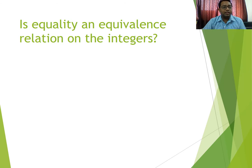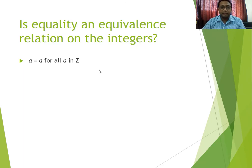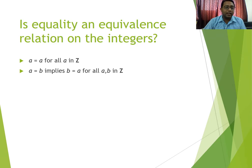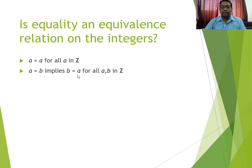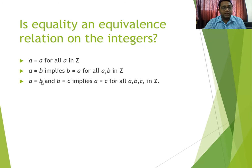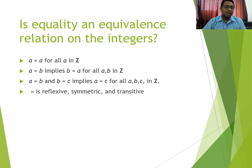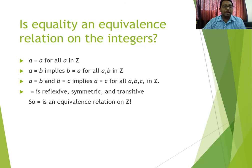Now, let us verify that equality is an equivalence relation on the set of integers. First, a = a for all a in S — obviously true, so it is reflexive. Second, if a = b then obviously b = a, so it is symmetric. Third, if a = b and b = c, then obviously a = c, so it is transitive also. Therefore the equals relation is reflexive, symmetric, and transitive — so this is an equivalence relation on Z.